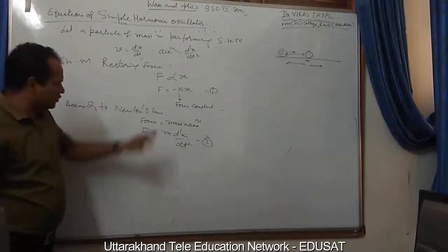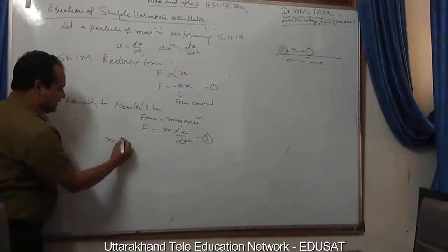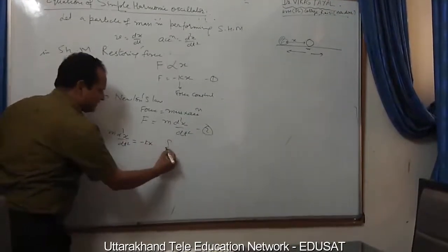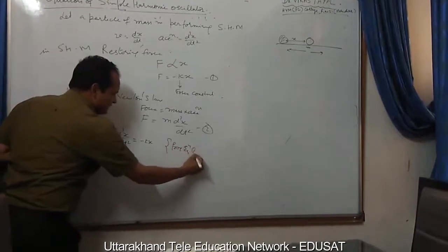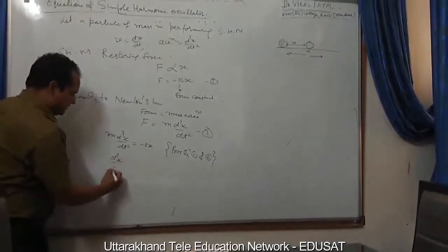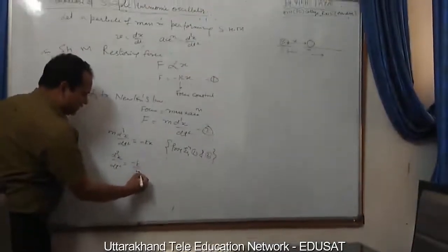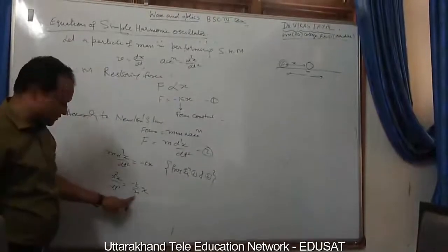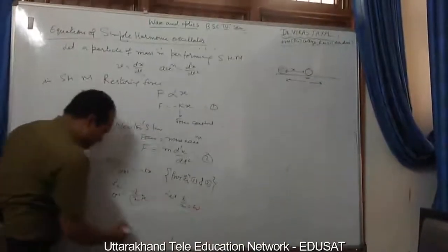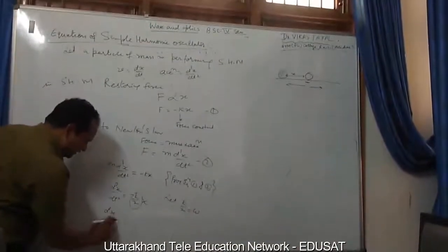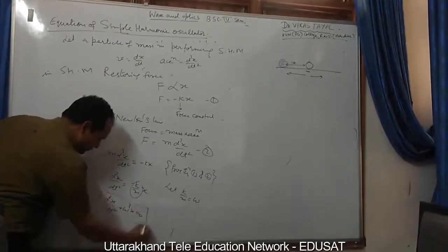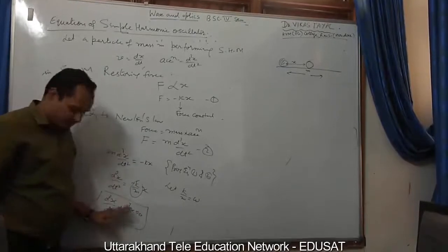From equations 1 and 2, since the left-hand sides are equal, we get M(d²x/dt²) = −kx. Letting ω² = k/m, the equation reduces to d²x/dt² + ω²x = 0. This is called the differential equation of simple harmonic motion.